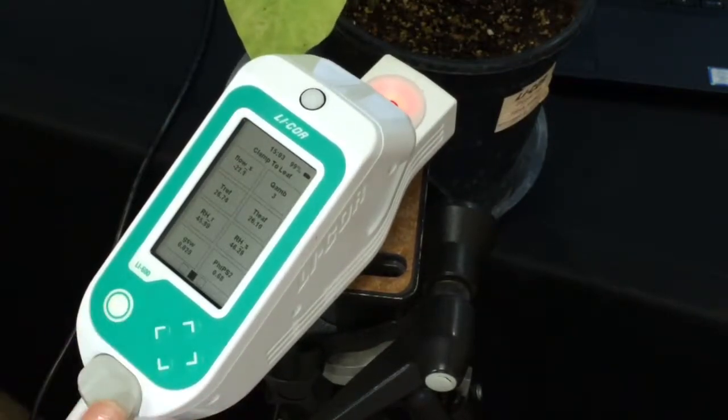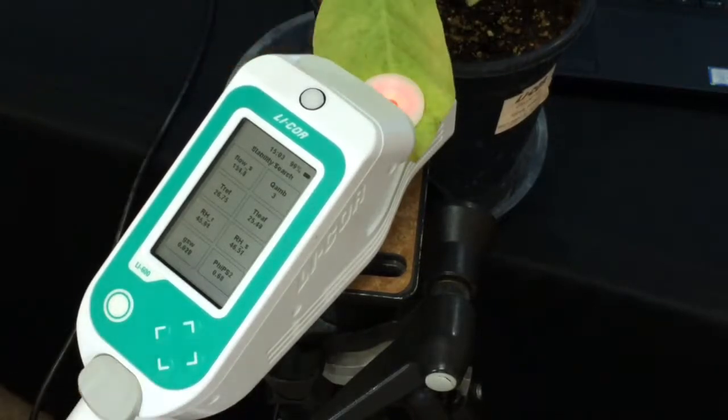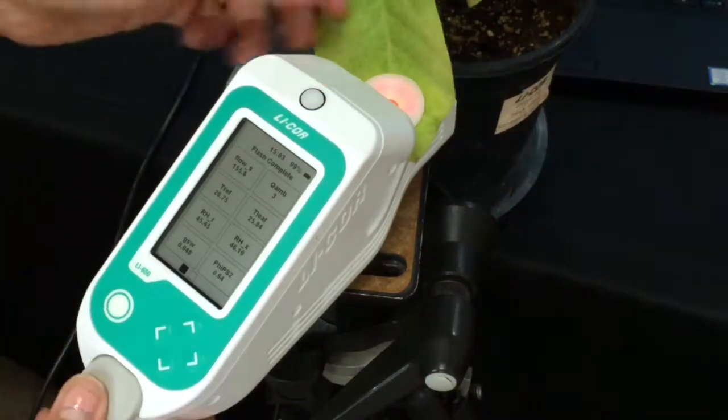Go back, select a new leaf. And we're still within that same treatment, so we're just going to clamp onto that next leaf. We don't have to scan the barcode again. It's going to look for stability, make a measurement, and unclamp.